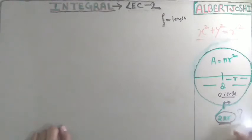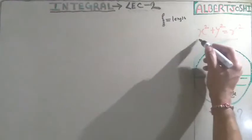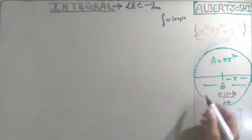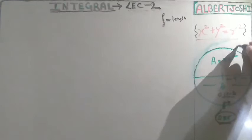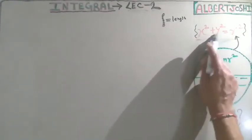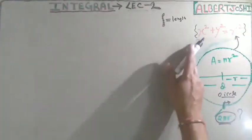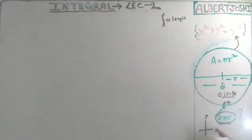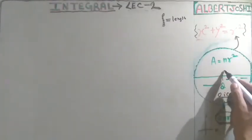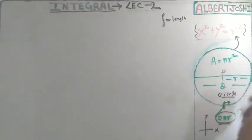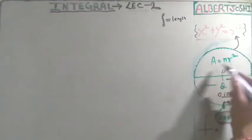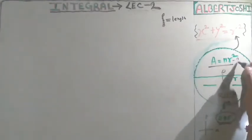The question is: where does 2πr come from? Whenever you use integration, you must have a function. The function for a circle is x² + y² = r², which we plot on the x-axis and y-axis. Here r is the radius, this is the origin, d is the diameter, and the area is πr².